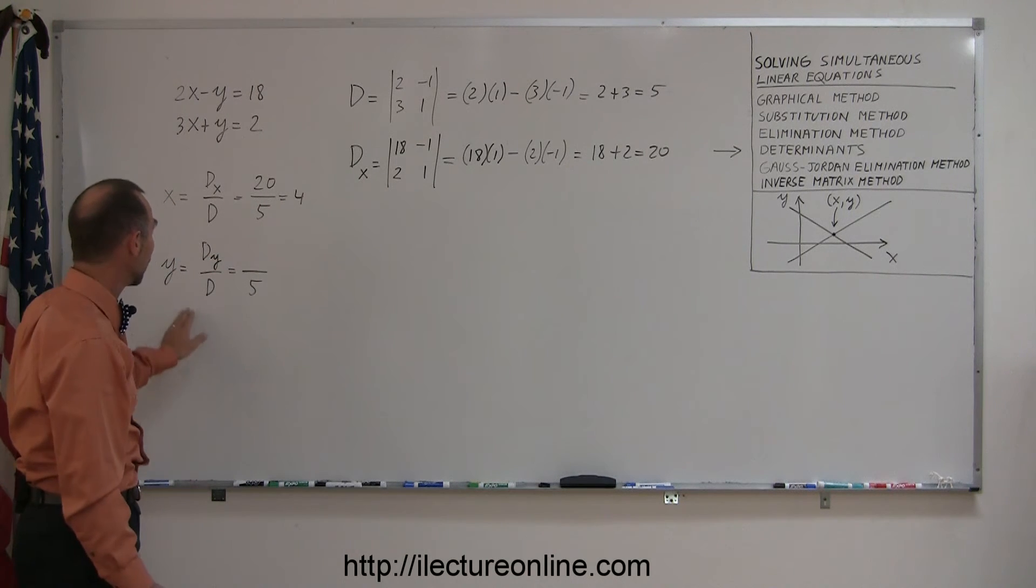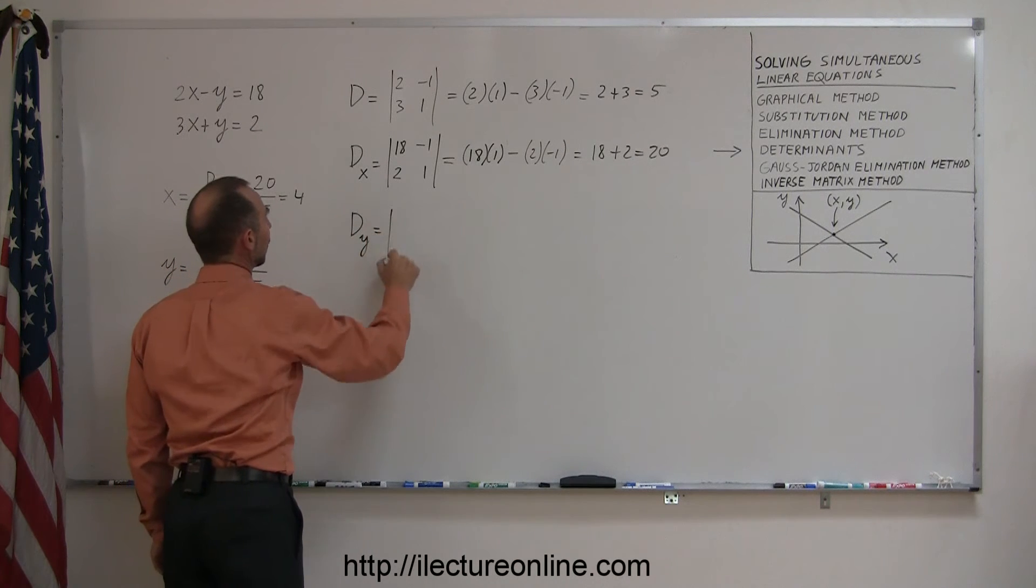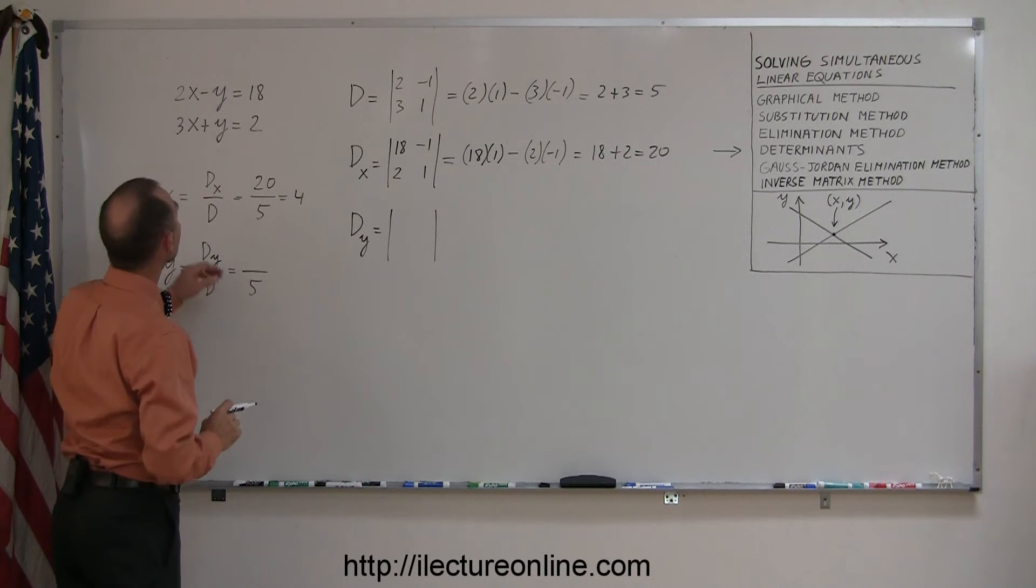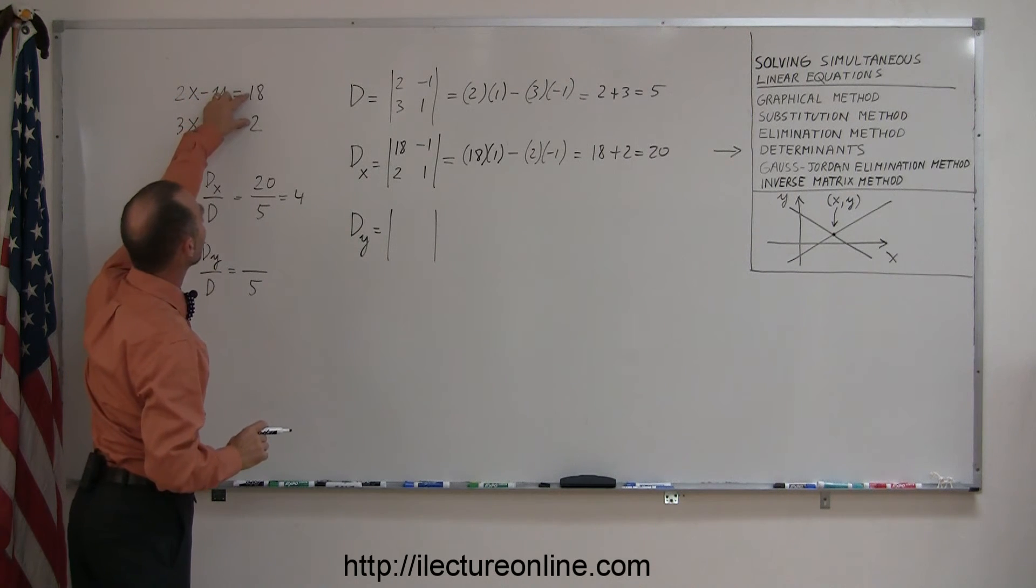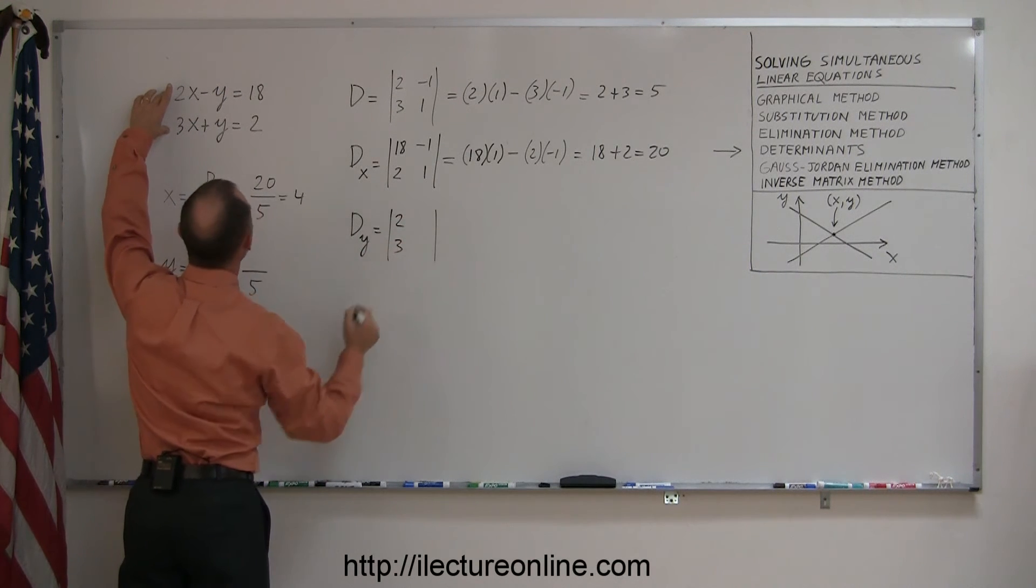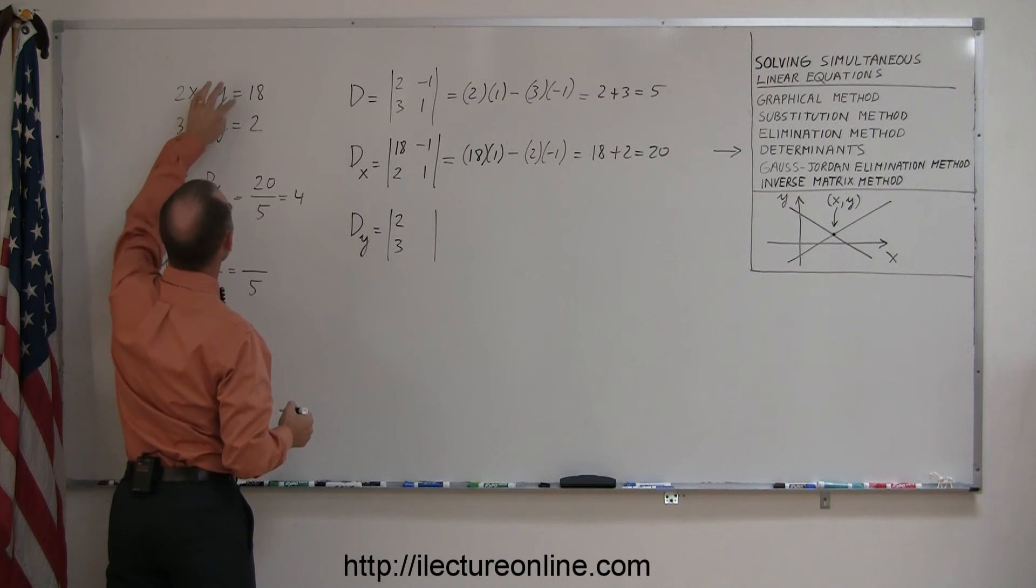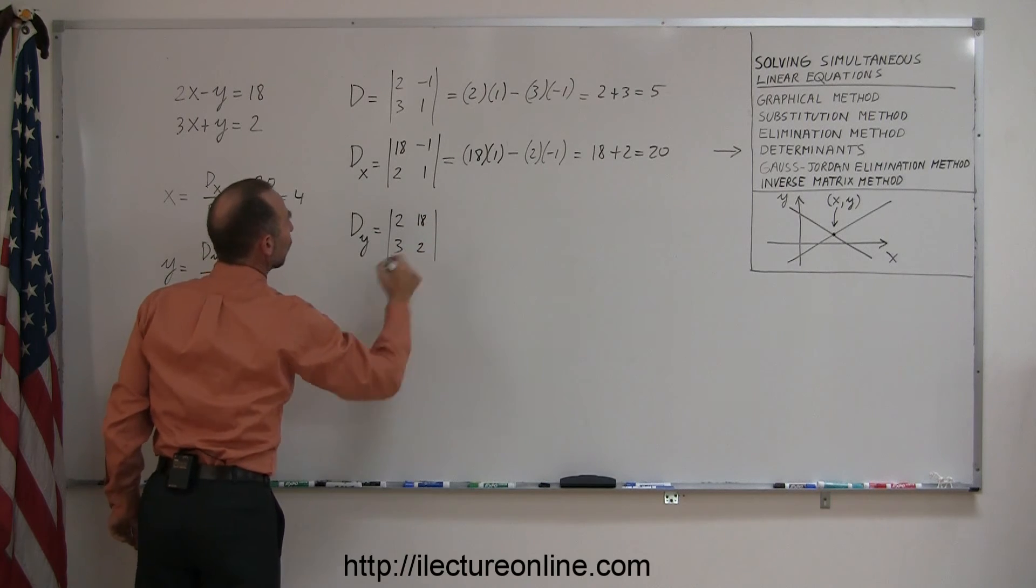Now we do the same for the y value, d sub y. And again, the way we find the determinant for the y is by taking the coefficients in front of the y variable and replacing them with the two constants on the right side of the equation. We leave the 2 and the 3 for the x alone, so 2 and 3 stays there, replace the negative 1 and the 1 by 18 and 2. So instead of writing negative 1 and 1, we write 18 and 2.